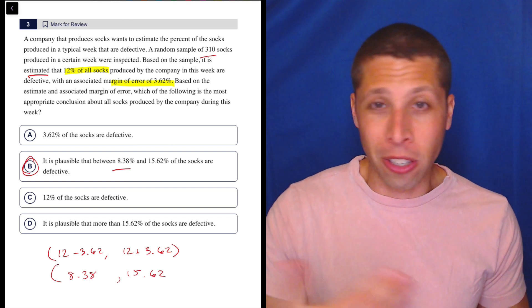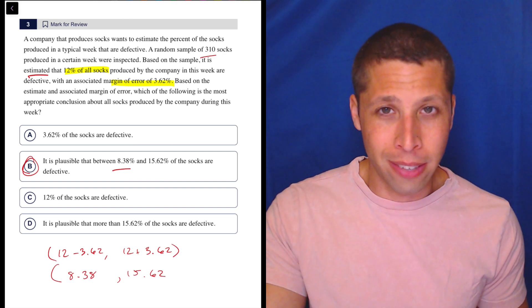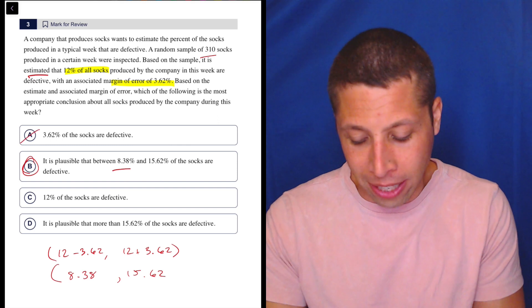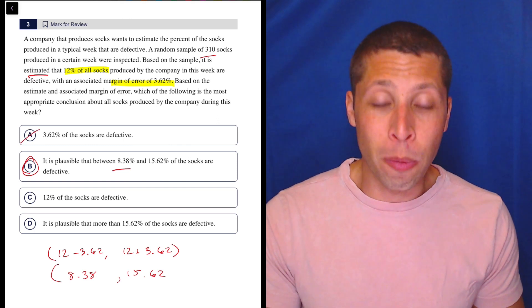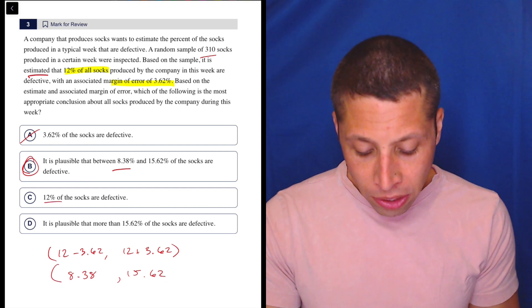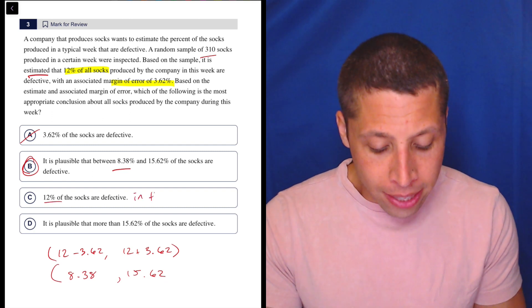Now, the reason A is wrong is that they're just confusing margin of error with the concept of the average, and so that doesn't really work. C is wrong because margin of error exists. So to be very clear,